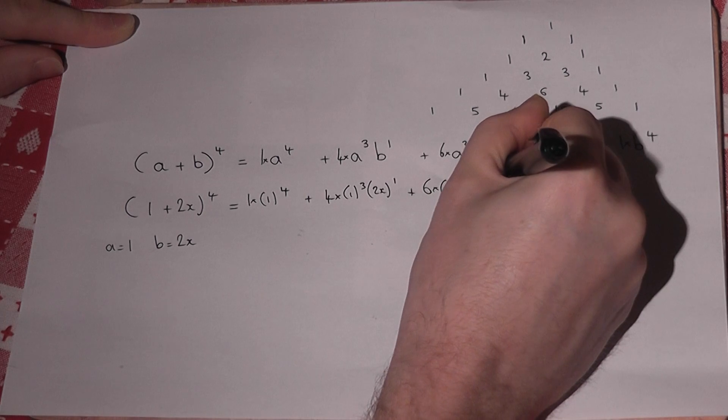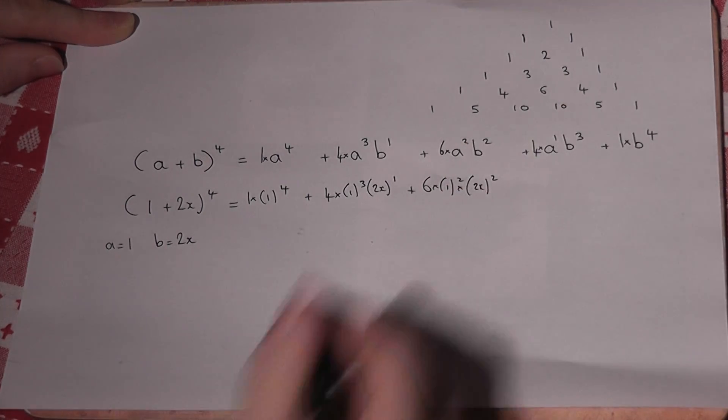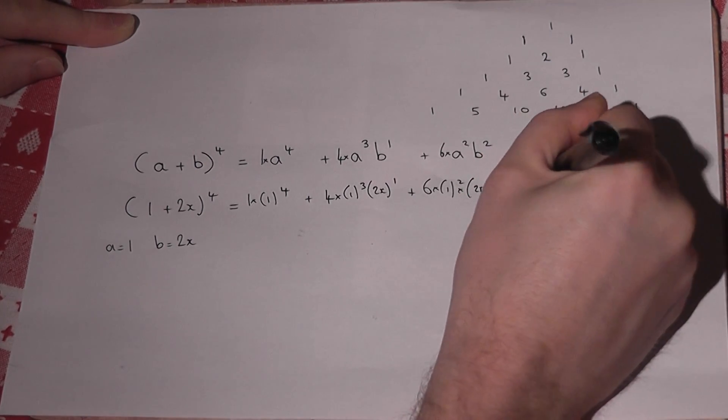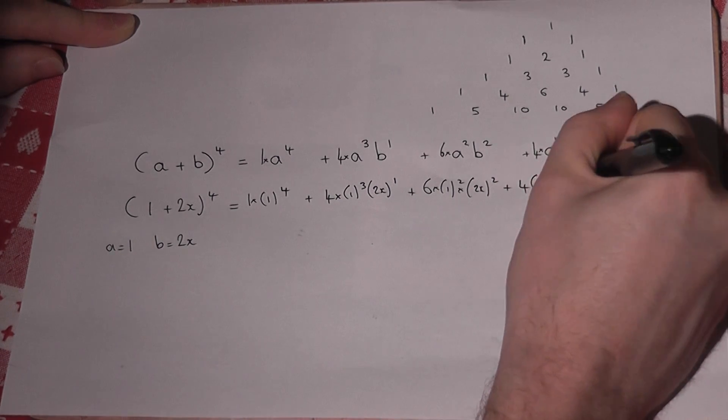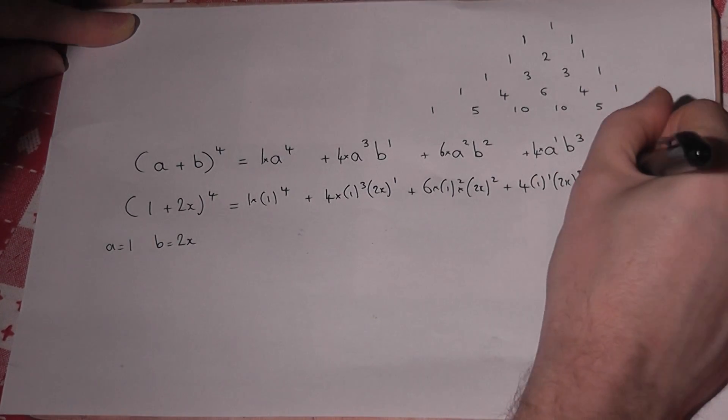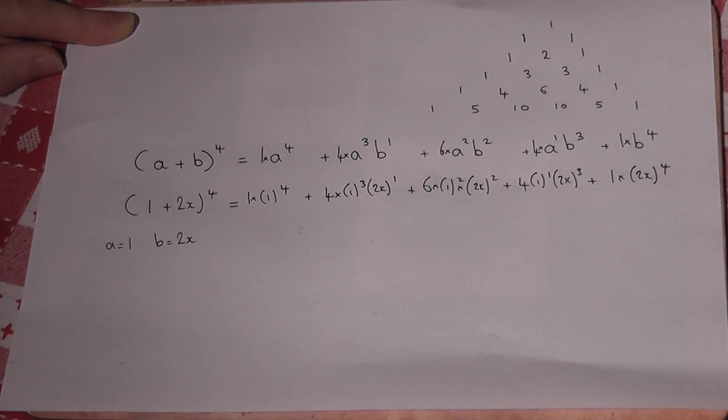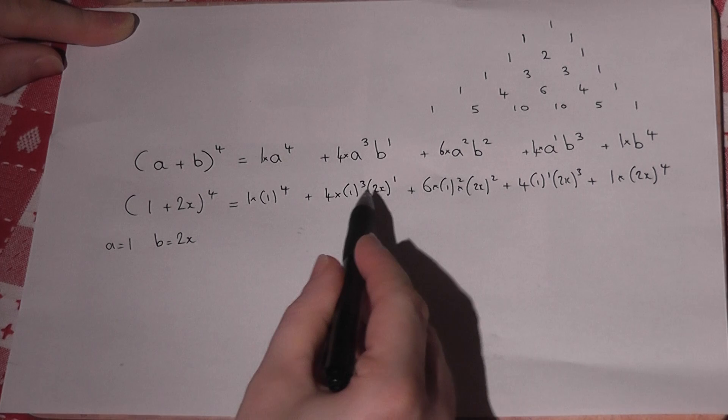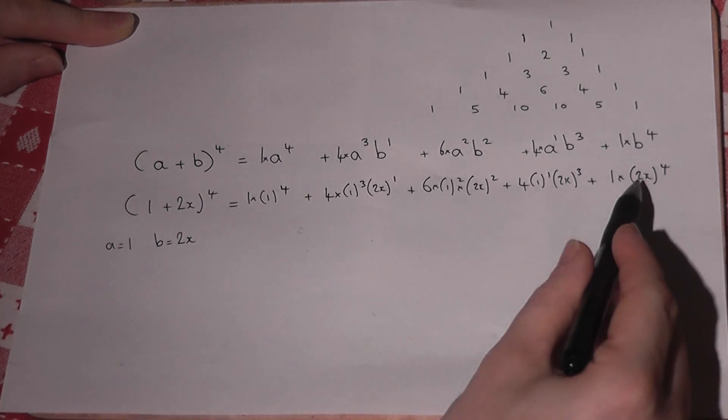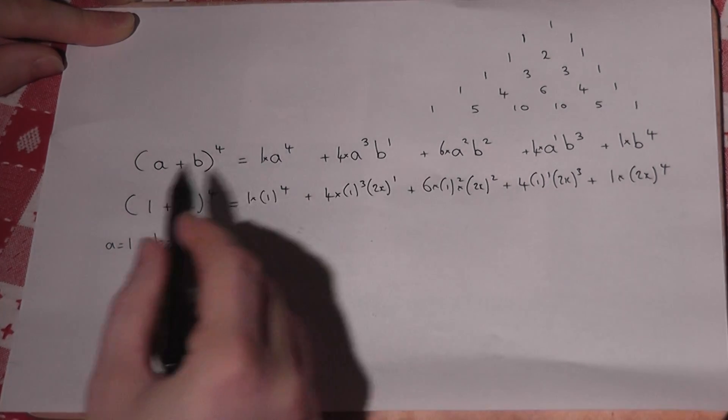2x all squared, 2x all squared. Then 4, 1 to the power of 1, 2x all cubed, and finally 1 times 2x to the power of 4. I place each term within a bracket, that's especially important when these terms are negative.